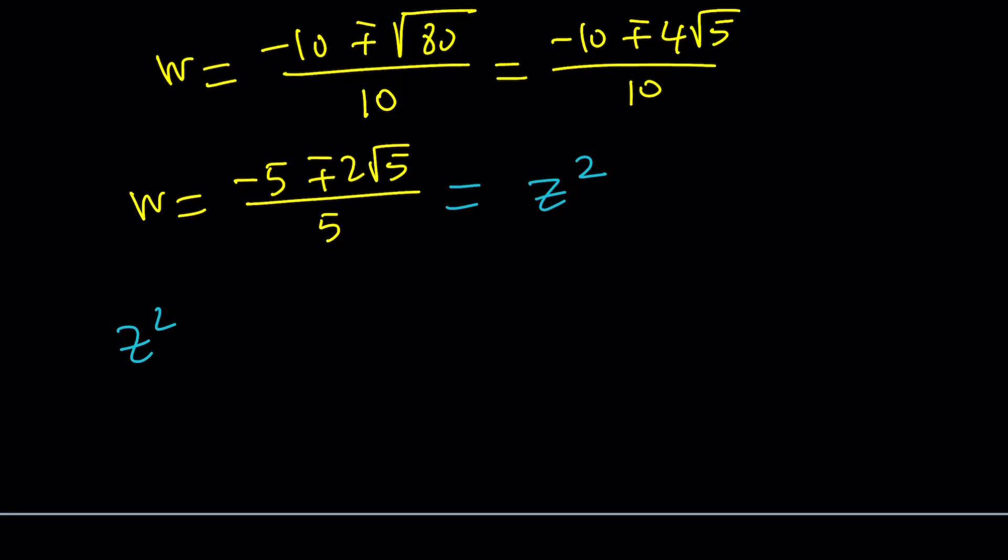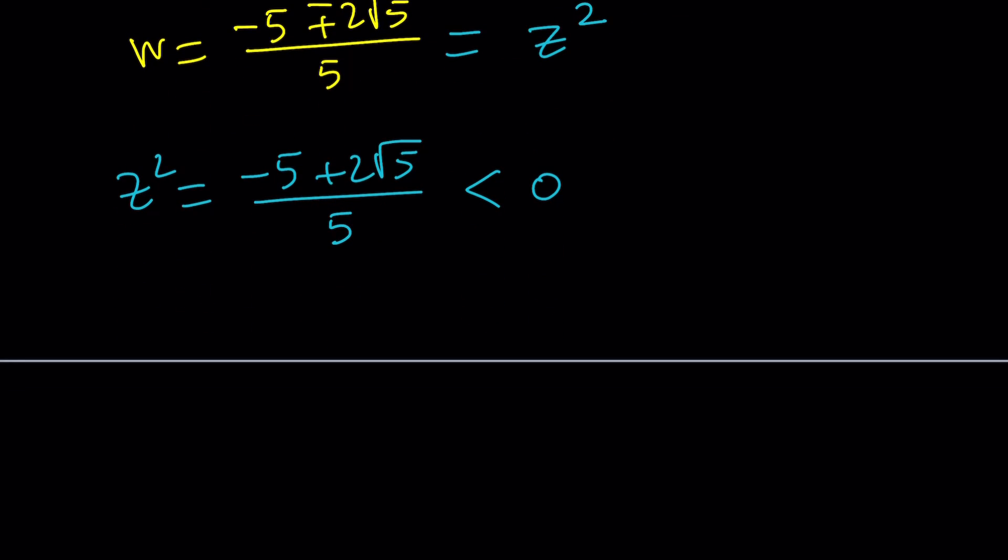So suppose we start with the first one, this one. First of all, you kind of have to think about this. Is this a positive quantity or a negative quantity? And it makes a difference. Because if it's a positive quantity, I'll just take the square roots. But if it's negative, then we're kind of dealing with an imaginary number, right? And as you know, 2 root 5 is the square root of 20 and 5 is the square root of 25. So this is a negative quantity. Great, it's going to give us non-real solutions. Then that's perfectly fine.